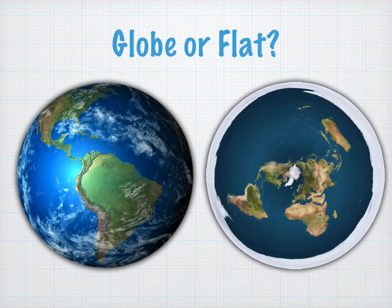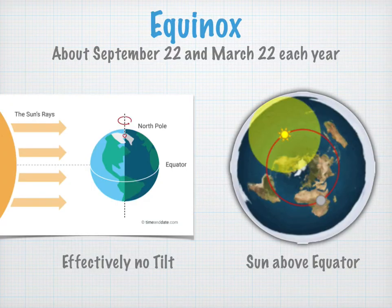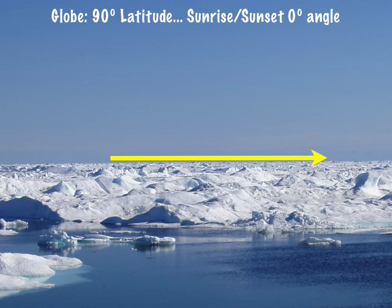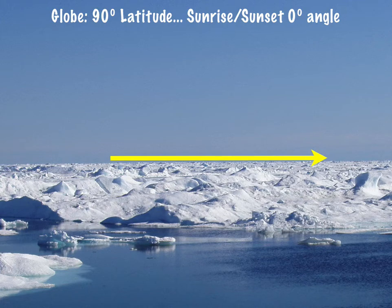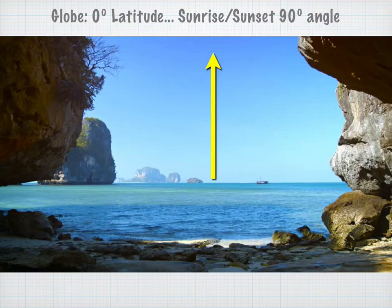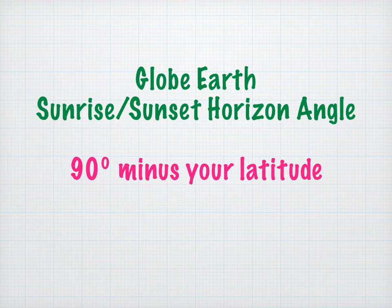Let's look at whether this supports the globe Earth or flat Earth. On the equinox on the globe Earth, there is effectively no tilt to the Earth's axis, whereas on the flat Earth the sun is simply tracing a circle right above the equator. On the globe Earth model at the North Pole, the sun traces a horizontal path across the horizon — at 90 degrees latitude, the sun moves at a zero degree angle. At the equator, zero degrees latitude, the sunrise and sunset angle is 90 degrees. This means there's an inverse relationship between sunrise-sunset angle and latitude, so on the globe Earth model the sunrise-sunset horizon angle on the equinox is going to be 90 degrees minus your latitude.